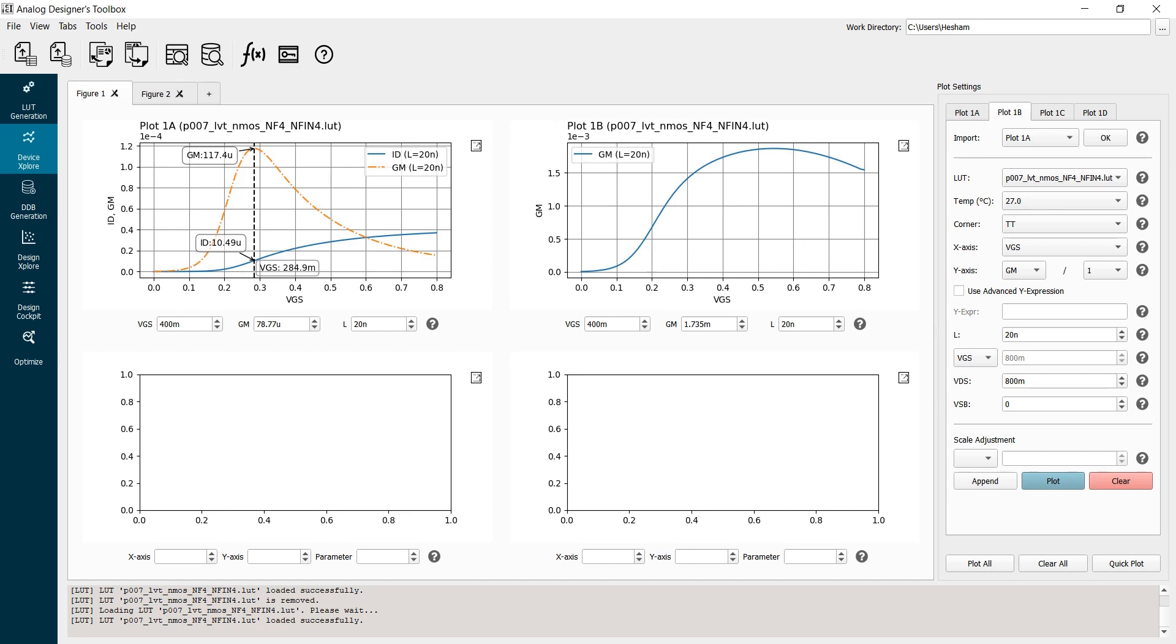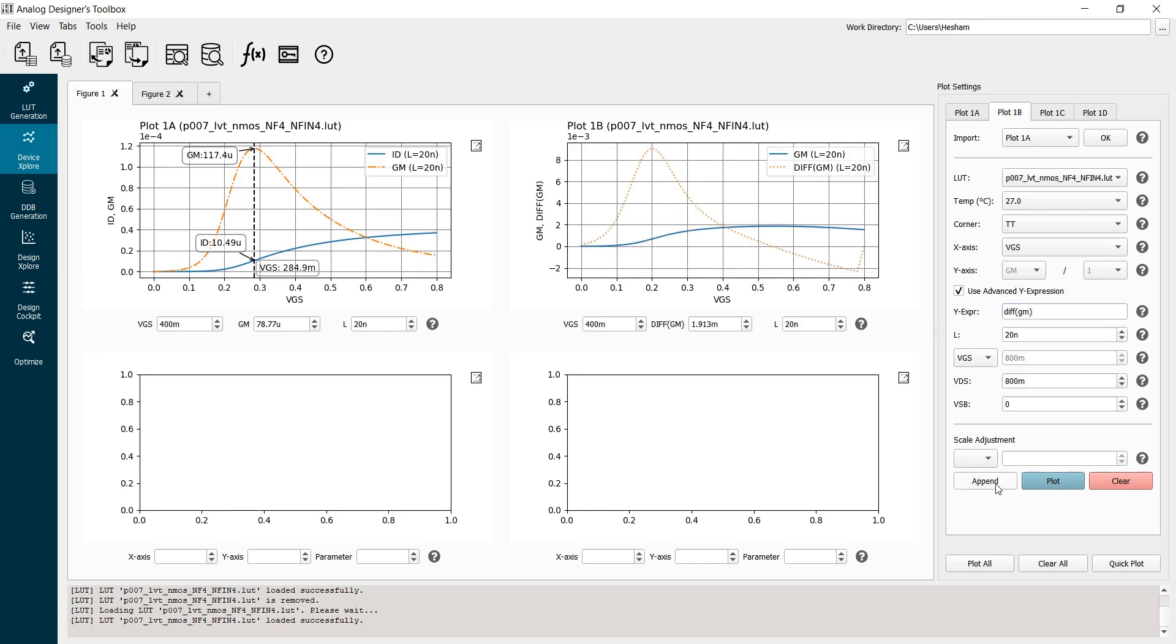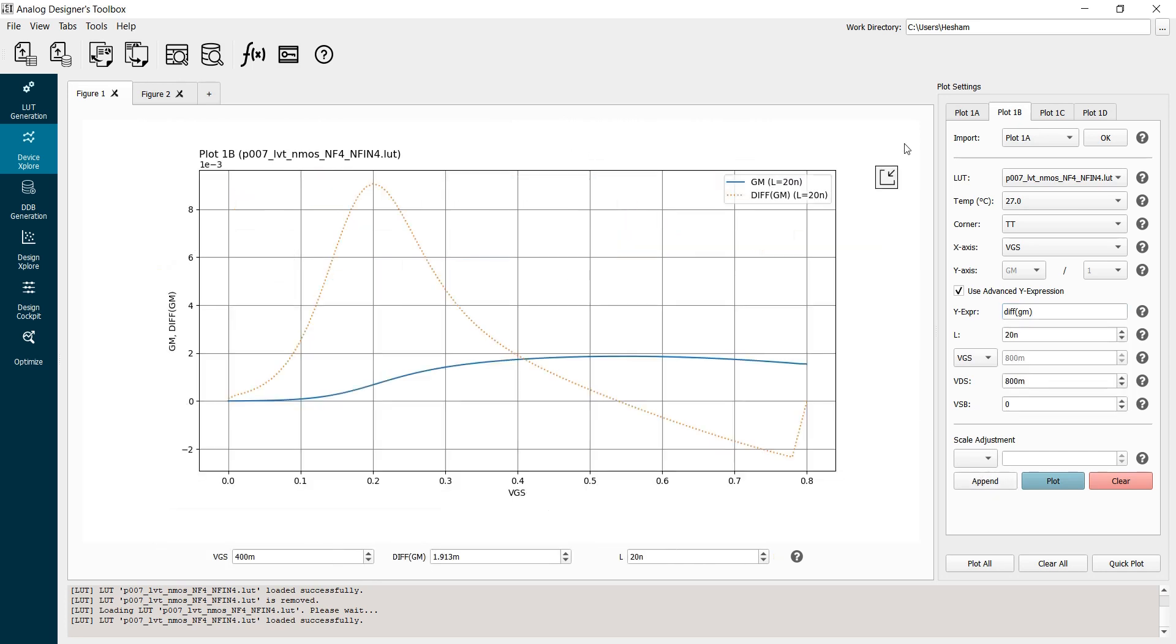Next, I want to plot the derivative of GM. So I go here to the advanced y-expression. And here I will write diff GM, which essentially calculates the derivative of GM. And I will append this to my plot. Again, I can maximize my plot here. As you can see, GM is not really a straight line. It varies a lot. And actually, it saturates, which indicates that in this region, the drain current is not quadratic versus VGS.